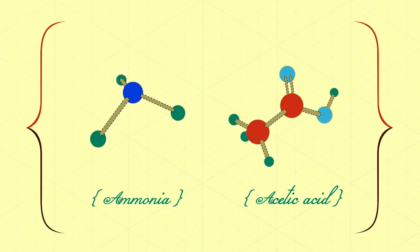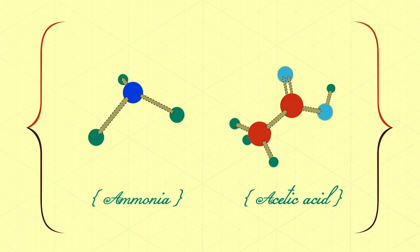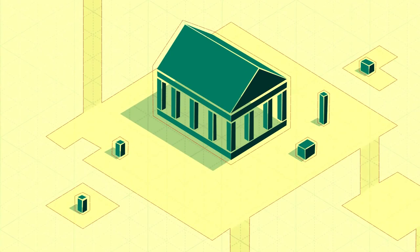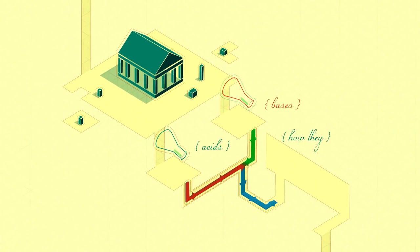You were probably taught how acids and bases behave on the molecular level. You were probably never taught that a long time ago, like ancient Greek ago, before anyone knew about atoms or molecules, acids and bases were defined by how they behaved.